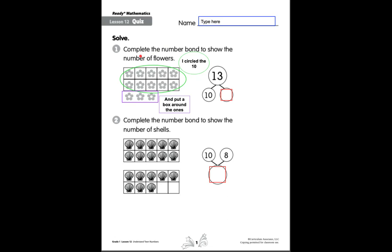Number one says complete the number bond to show the number of flowers. I have on your quiz already circled the ten in green. I circled the ten and I put a box around the extra ones. I circled my ten here, and I put a box around my ones.